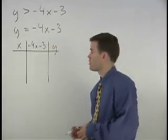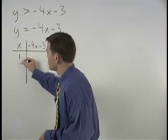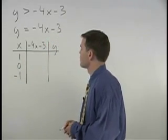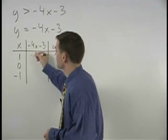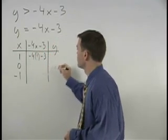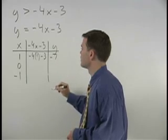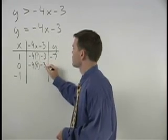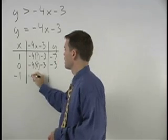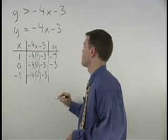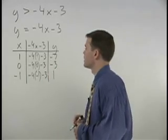Plugging our values of 1, 0, and negative 1 in for x, we find that y equals negative 4 times 1 minus 3, or negative 7. Negative 4 times 0 minus 3, or negative 3. And negative 4 times negative 1 minus 3, or positive 1.